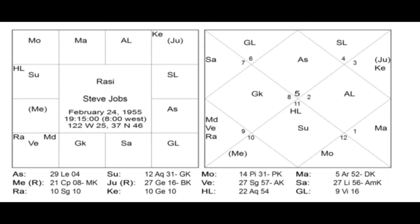Before we go deeper into this chart, let's look at the pending karma technique. In a nutshell, observe the planets in the sixth house and the placement of the sixth lord. Mercury, the planet of communication and communicative equipment, is placed in Capricorn. The sixth lord Saturn is exalted and placed in the third house of communication and computing, in the sign of Libra.